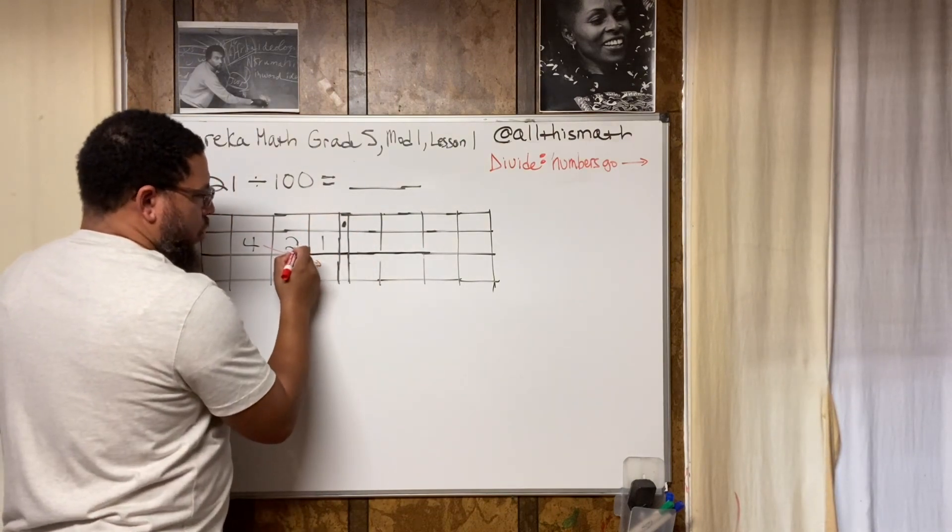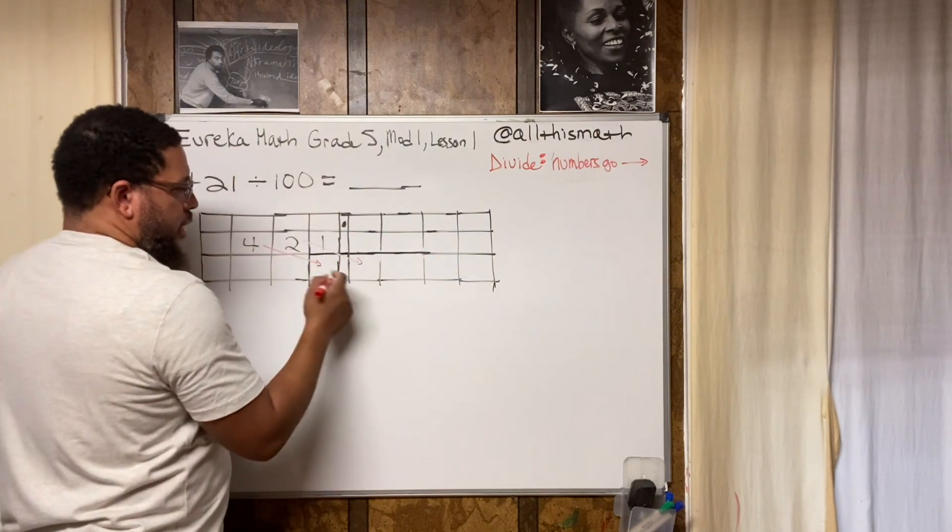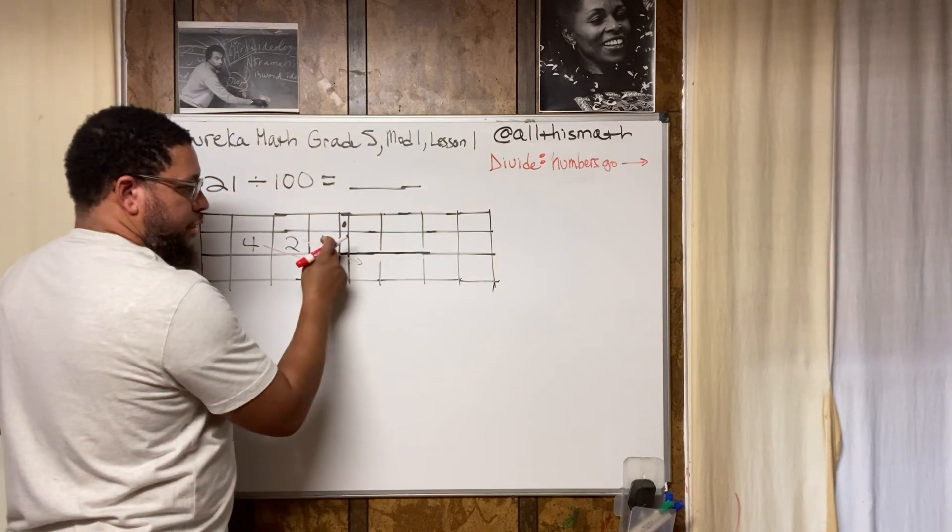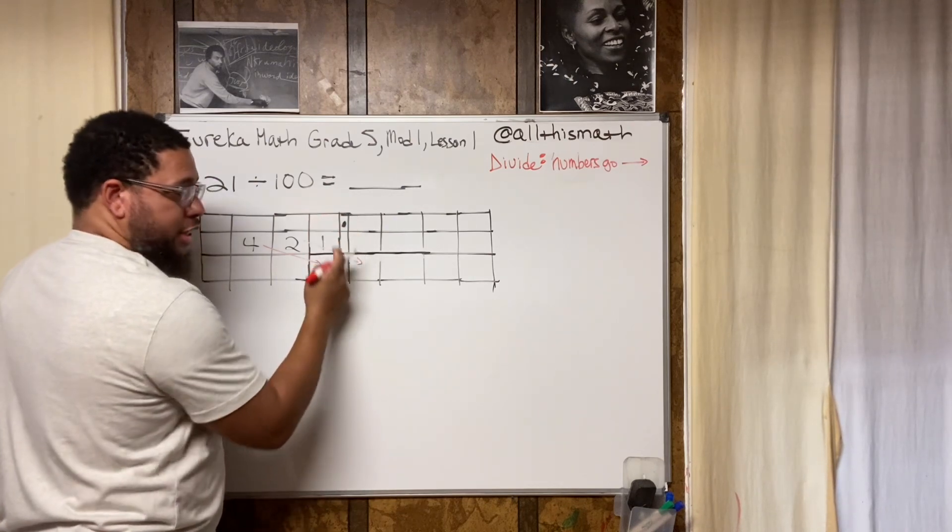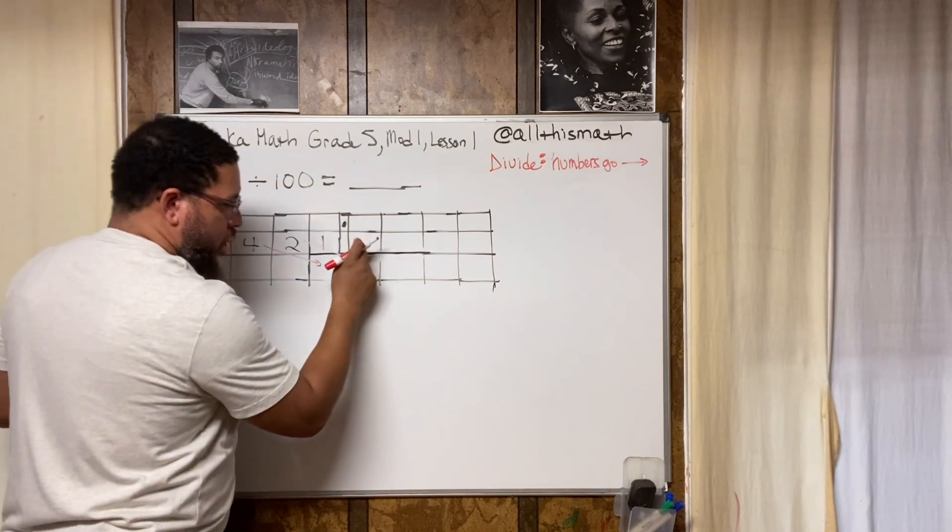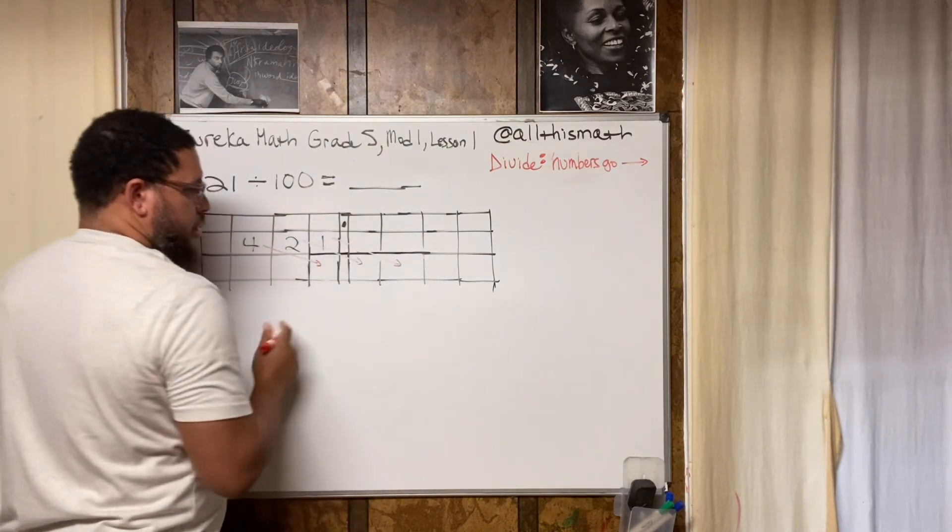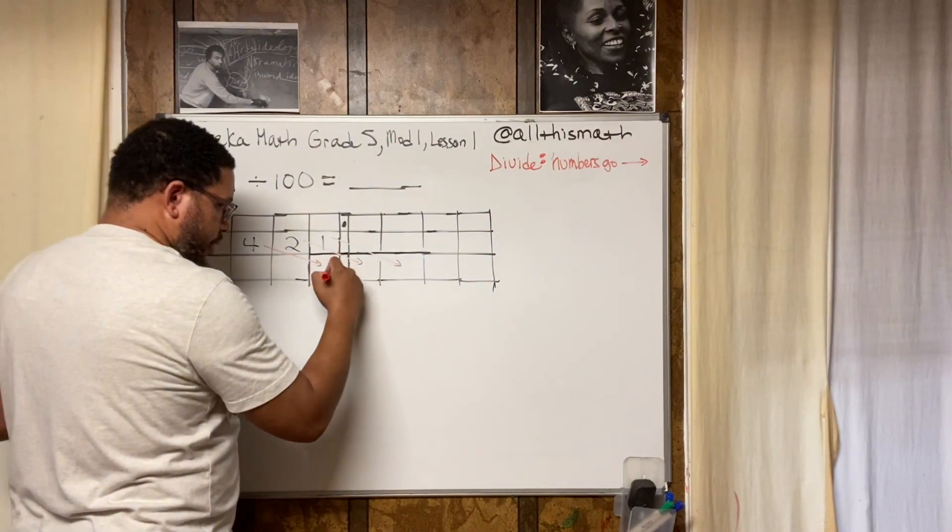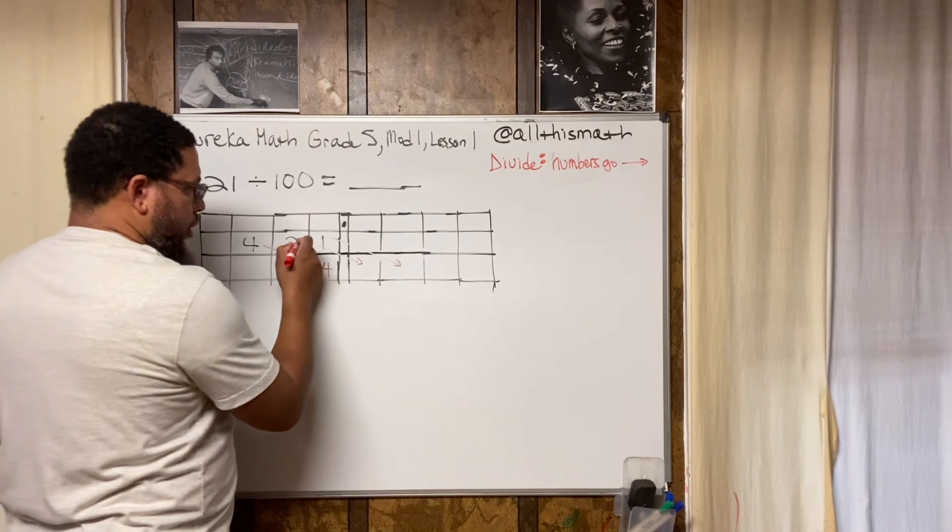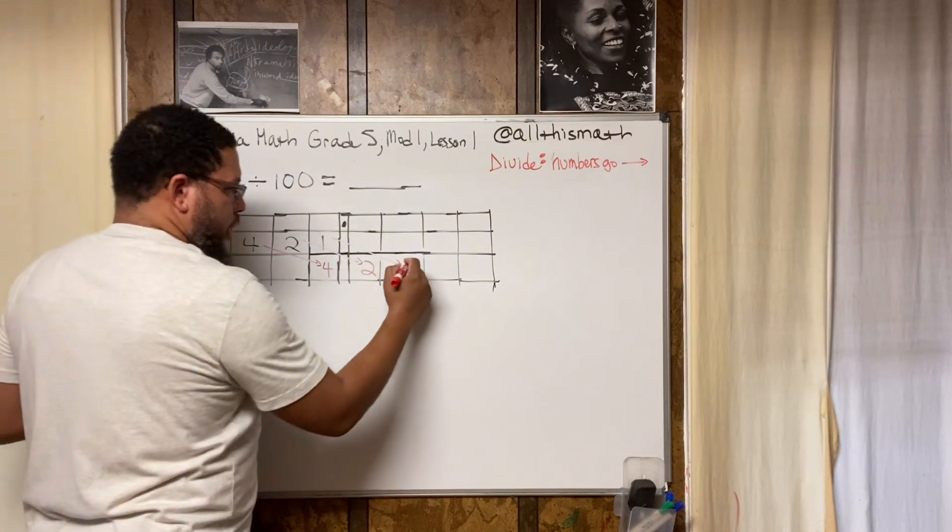And then the one is going two spaces. This space does not count because that's for the decimal point. So we're going one, two. Look where the four goes, follow the arrow, the four is going to go right here. Look where the two goes, the two is going to go right here. Look where the one goes, the one is going to go right here.